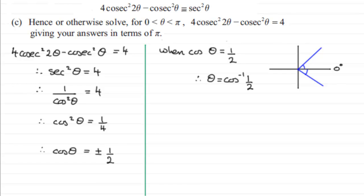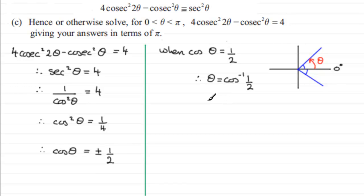Both angles are the same size. Normally the fourth-quadrant solution would also be valid, but our range requires θ to be between 0 and π radians, so going beyond π is not allowed. The inverse cosine of a half is 60 degrees, and in radians 60 degrees is π over 3 radians, since π radians equals 180 degrees divided by 3.